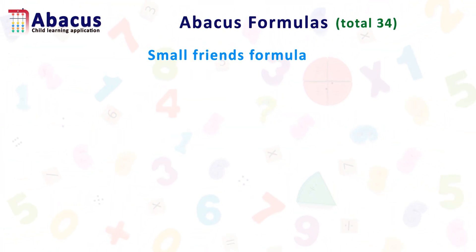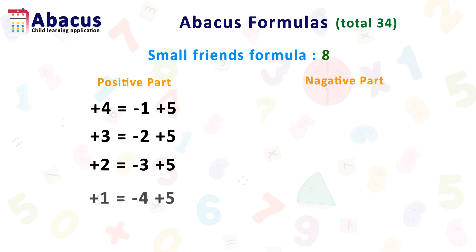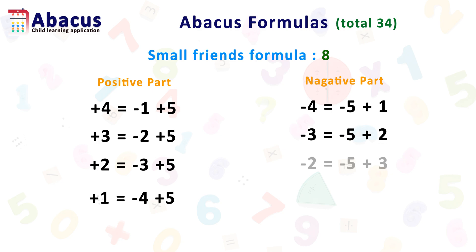One of the formulas is the small friend formula. There are 8 small friend formulas. In every formula there are 2 parts — one is positive part and one is negative part. The positive part formulas of small friend are: 1 plus 4 equals minus 1 plus 5; plus 3 equals minus 2 plus 5; plus 2 equals minus 3 plus 5; plus 1 equals minus 4 plus 5. The negative part formulas are: minus 4 equals minus 5 plus 1; minus 3 equals minus 5 plus 2; minus 2 equals minus 5 plus 3; minus 1 equals minus 5 plus 4.